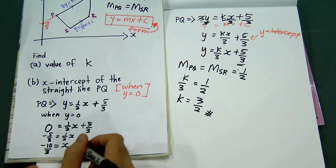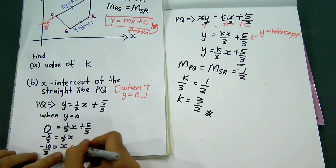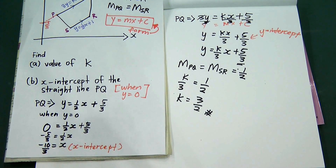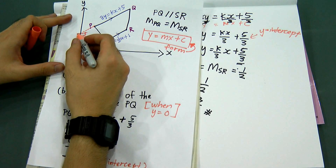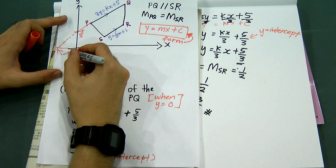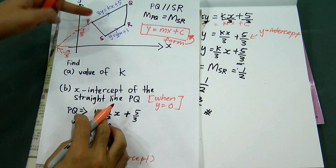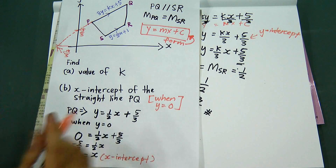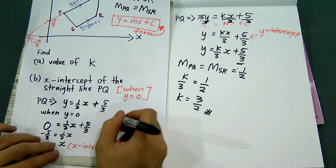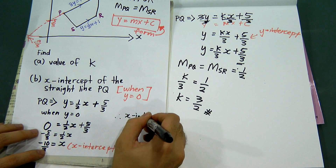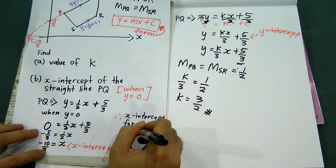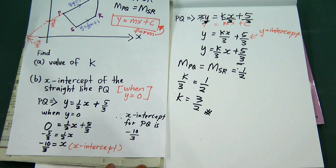Therefore x = -10/3, and this x value is the x-intercept. This means if you continue to draw the line, it will cut the x-axis at -10/3. This is what we call the x-intercept — straight line PQ cuts the x-axis at this point. So the x-intercept for PQ is -10/3. That's all for this question.